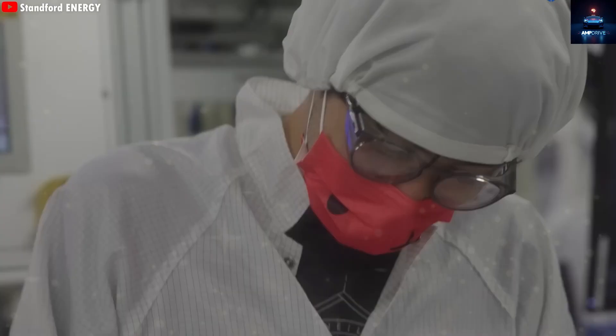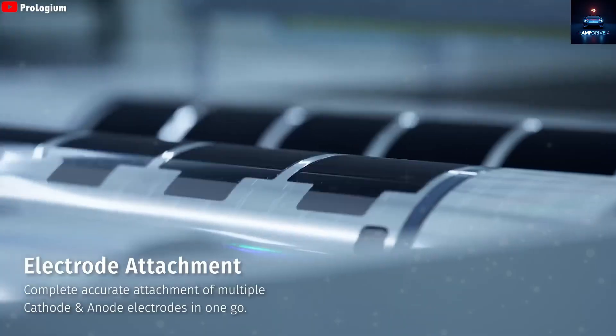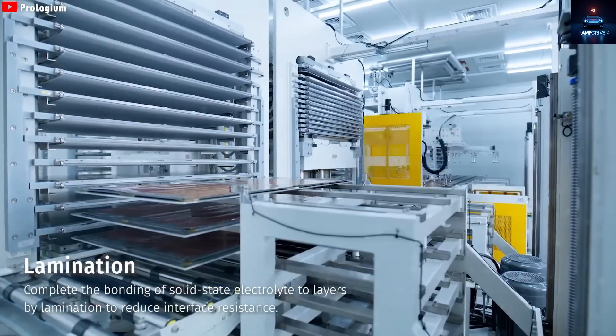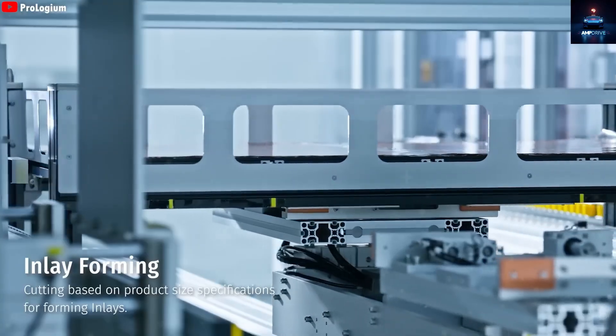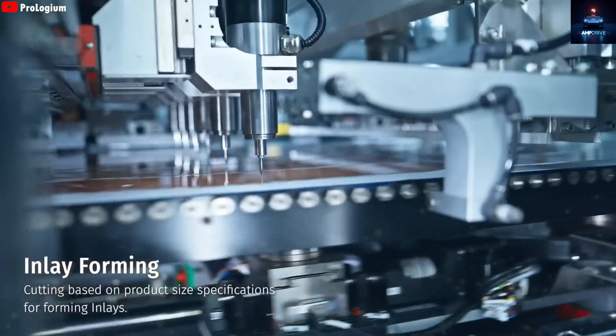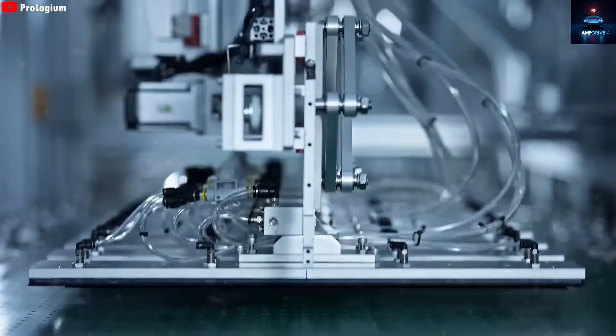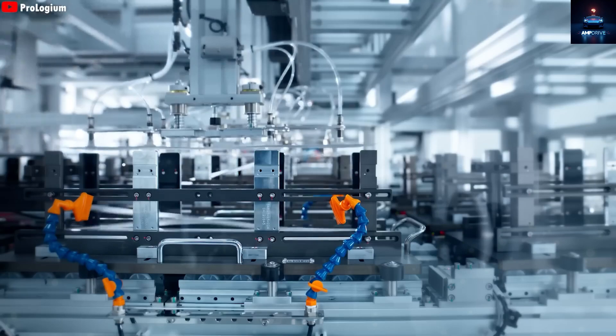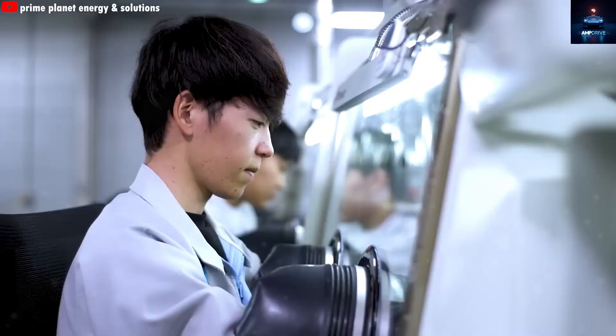In contrast, Tesla's 4680 battery is already being made on a large scale. More than 500,000 cells are being produced daily. Although only the Cybertruck is using these batteries for now, their performance is impressive. It is still unclear why Tesla has not yet used them in more models. Experts estimate the 4680 battery costs between $114 and $170 per kilowatt hour, with Elon Musk aiming to drop that to $70 by expanding production to 1,000 gigawatt hours per year.